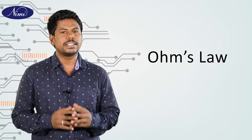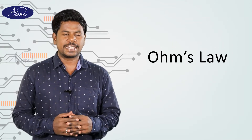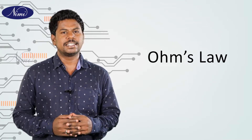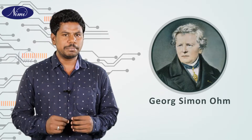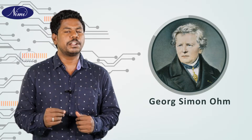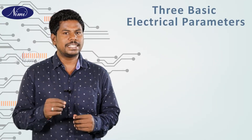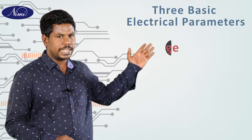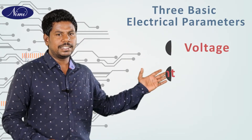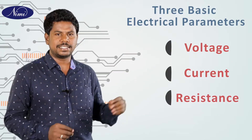Ohm's law is a very basic law in electrical engineering. This law was suggested by a German scientist, Sir George Simon Ohm. He gives a relationship between three basic electrical parameters: voltage, current, and resistance.